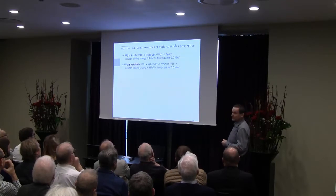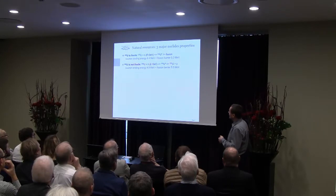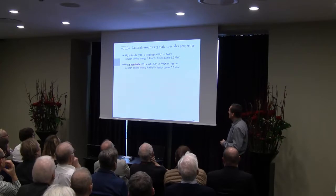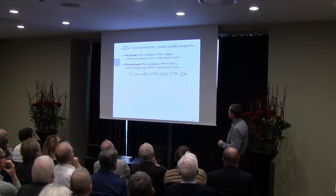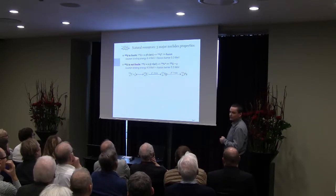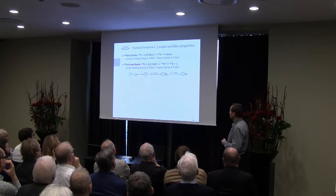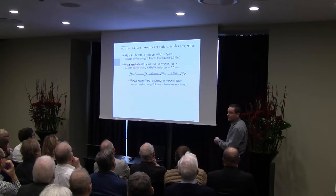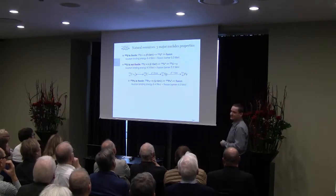Then we have uranium-238. It's not fissile — it captures the neutron and creates the isotope uranium-239. But we know that this element decays to plutonium-239, which is fissile again, because the binding energy of the last neutron is higher than the fission barrier.